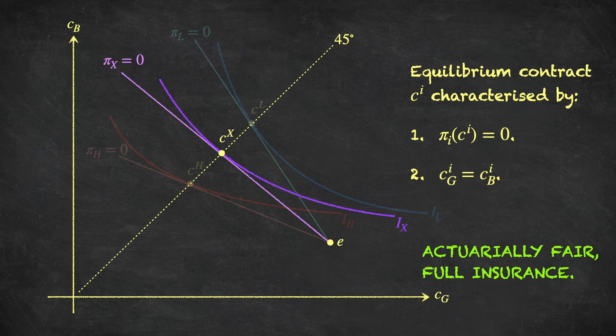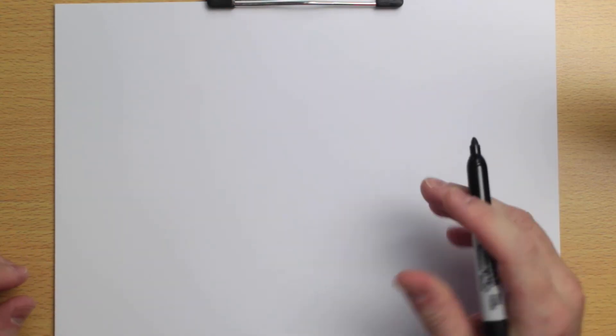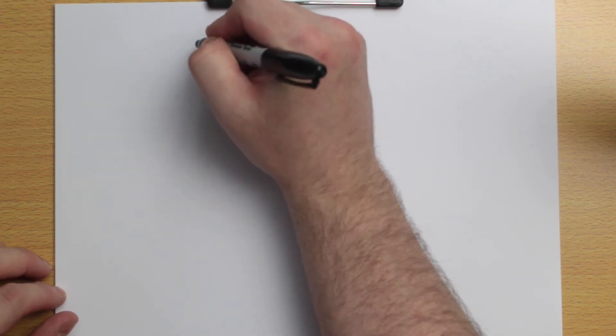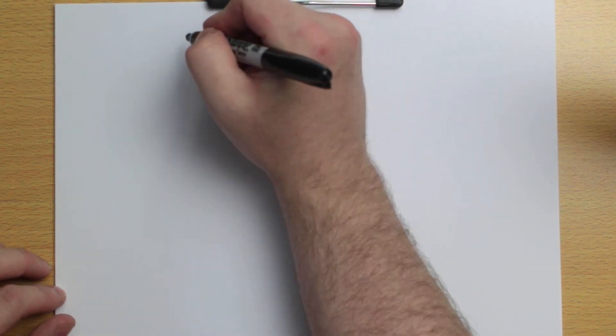Let's go on paper now and discuss the Hirschleifer effect to see whether, if given a choice, consumers would rather have void information compared to perfect information. So, under perfect information the equilibrium contract for high-risk types is CH.